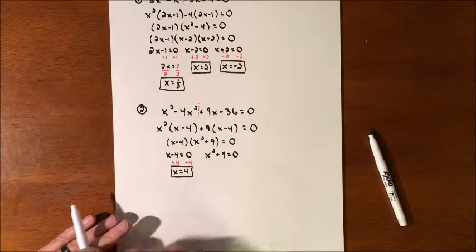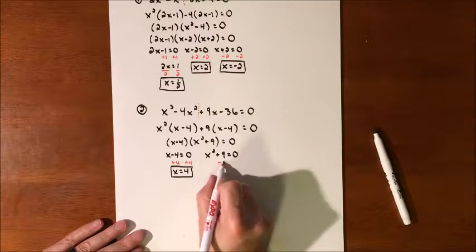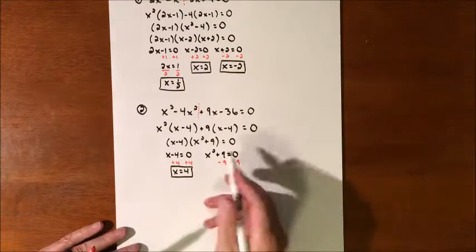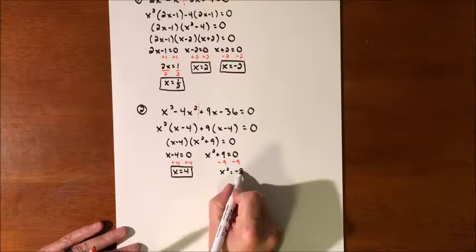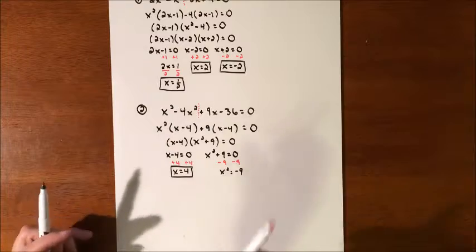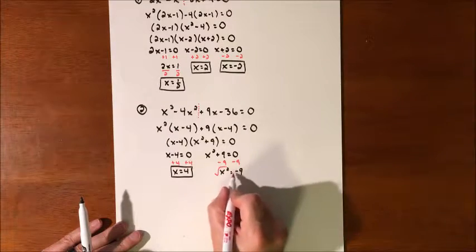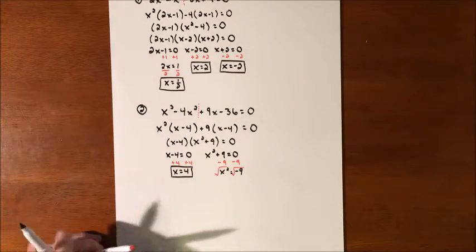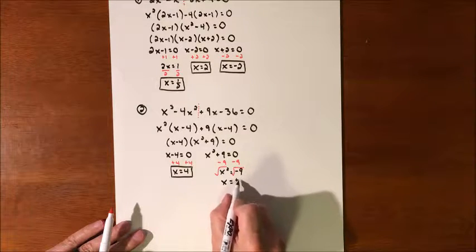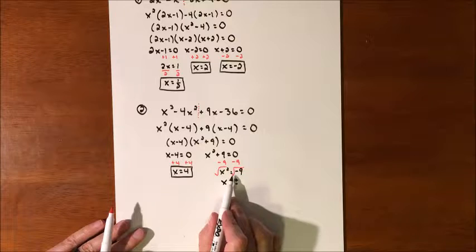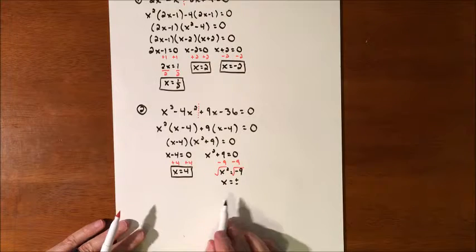And we're going to subtract 9 from both sides. So we'll get x squared equal negative 9. And we need to get rid of the square. So we'll square root both sides. And x is going to equal a plus and a minus. Anytime we bring in the square root to solve, we're always going to get a positive and a negative.